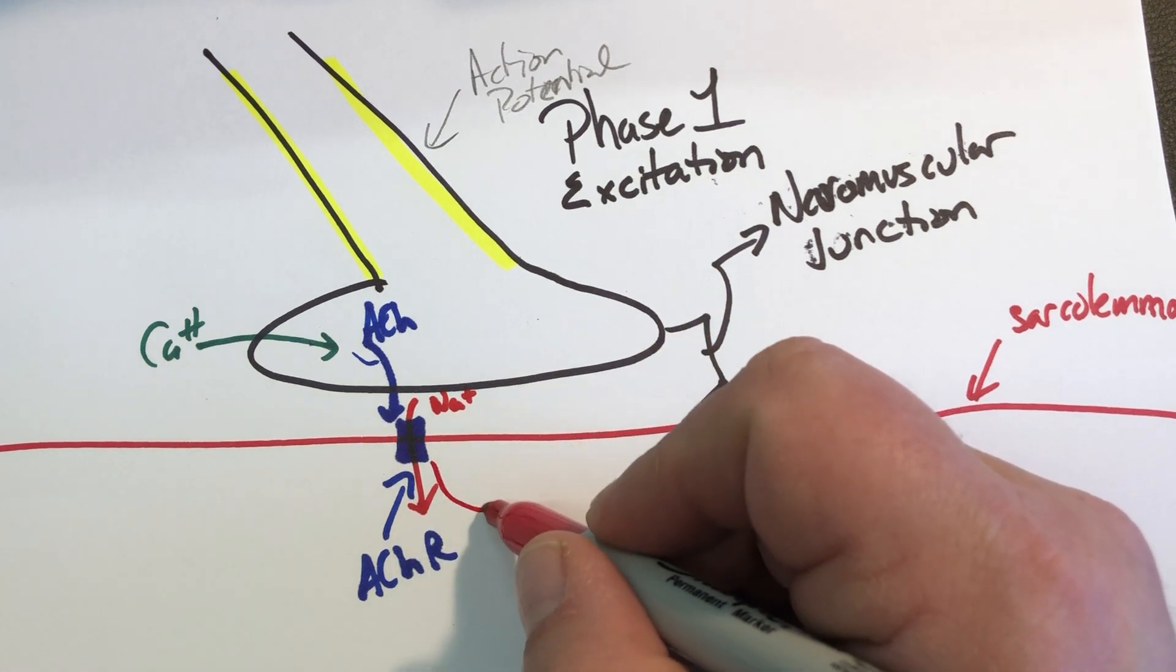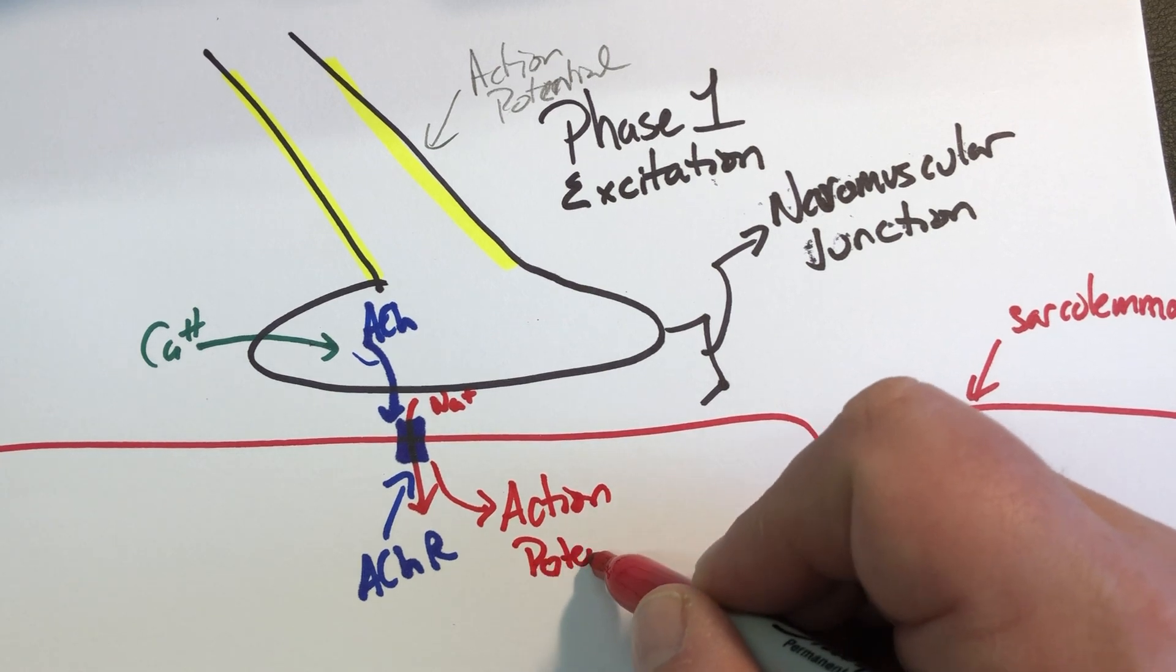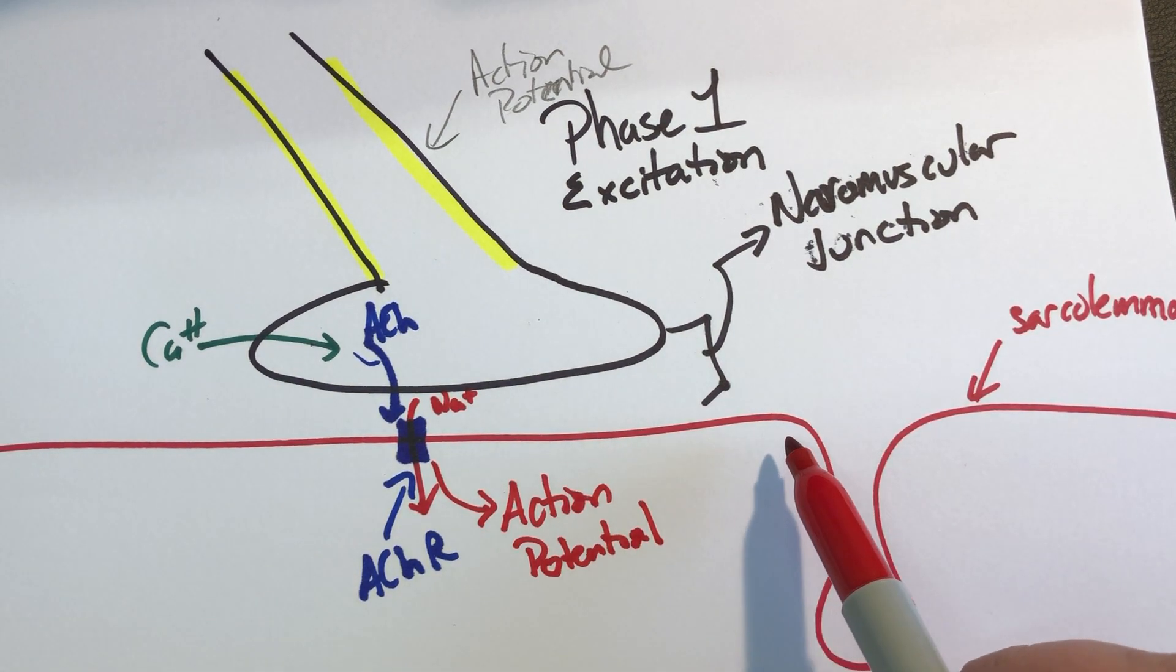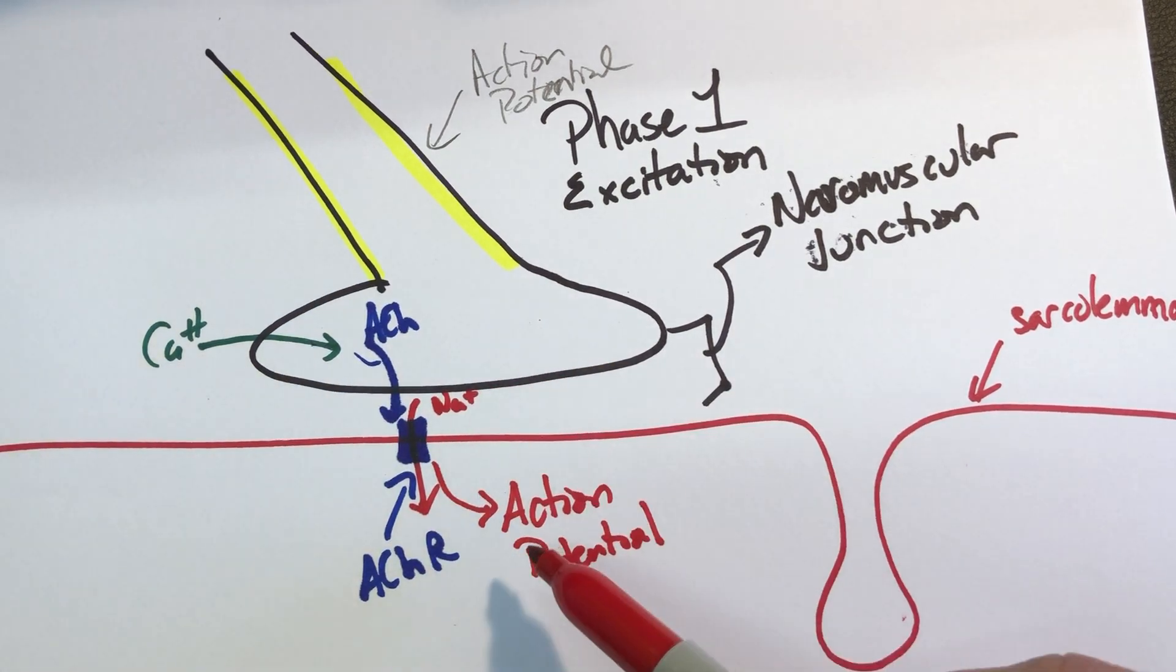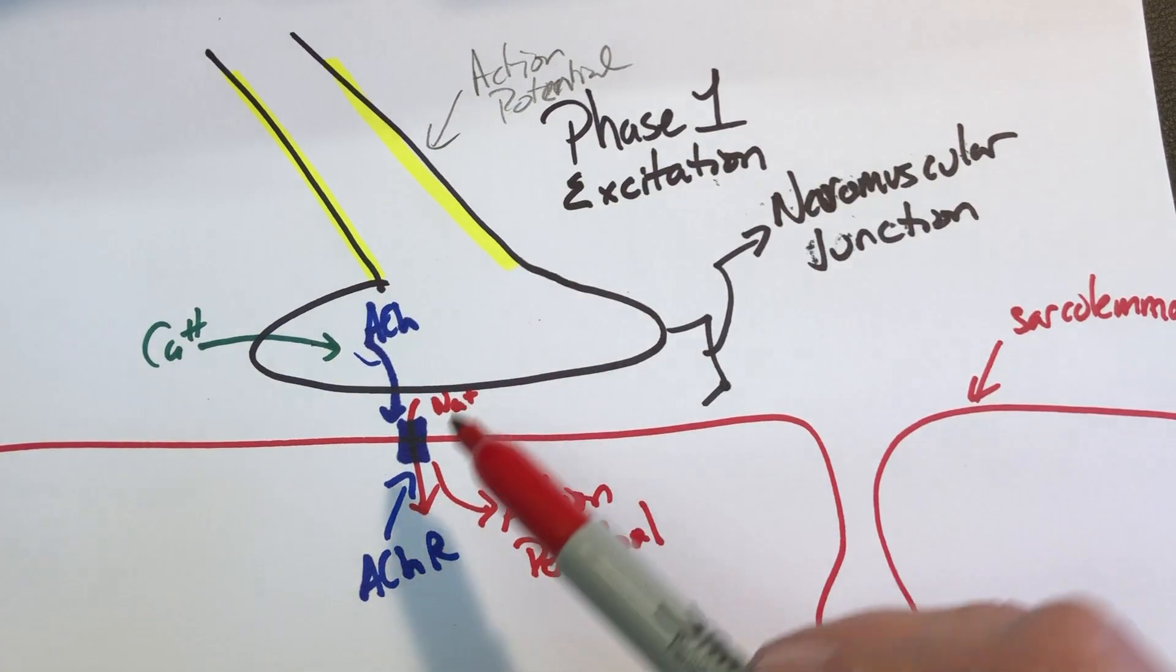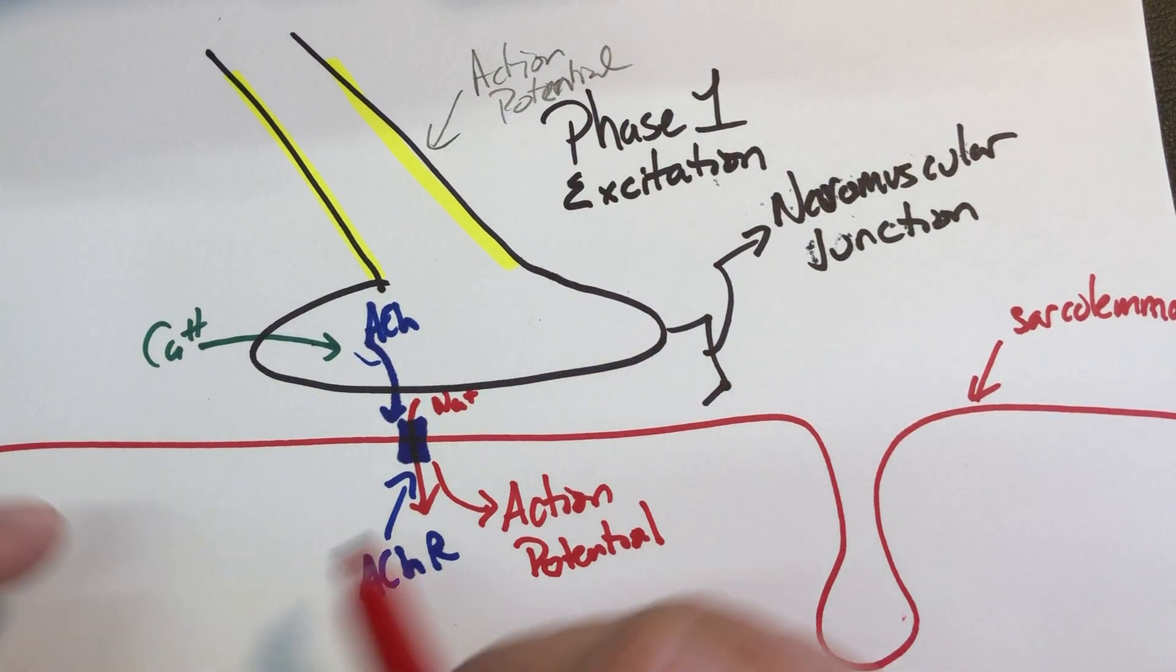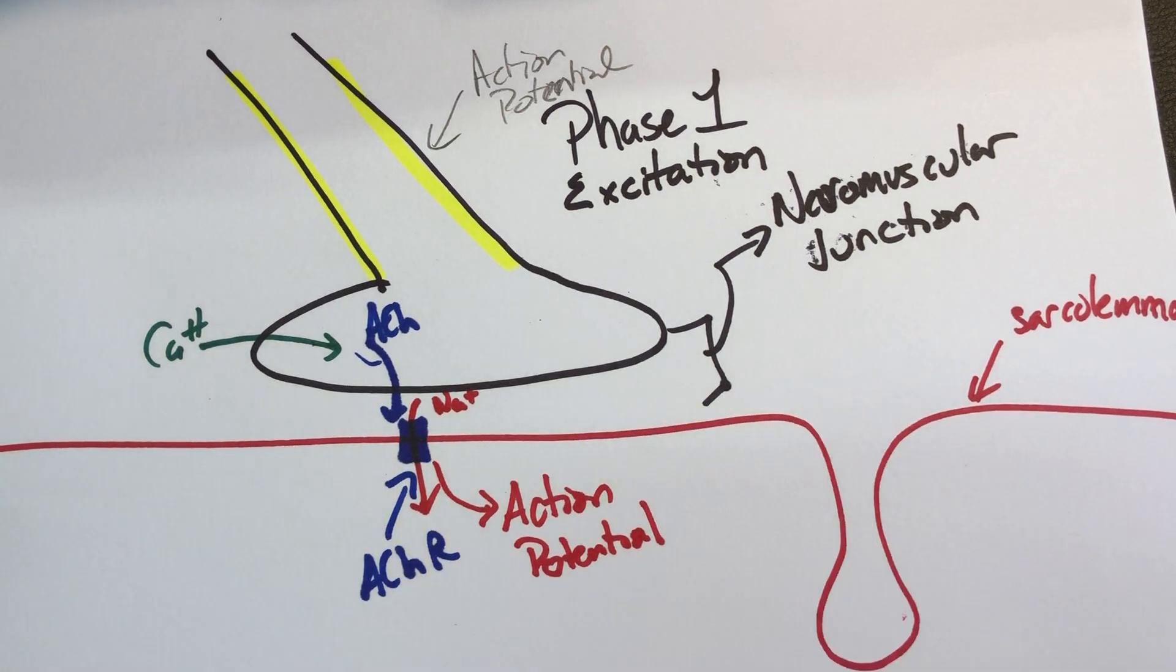And so what this leads to is an action potential in the muscle membrane. Now, all of the same things that we've already discussed that happen in an action potential in the neuron happen in an action potential in the muscle cell. And just like in an axon, if we stimulate one part of the sarcolemma, because this whole sarcolemma conducts electricity, that electricity will be passed along the entire length of this sarcolemma membrane.